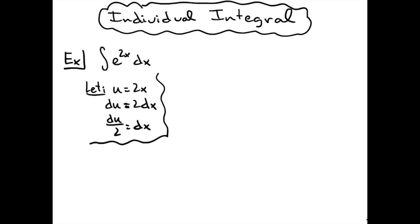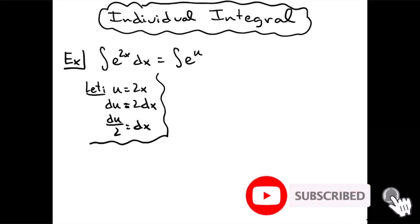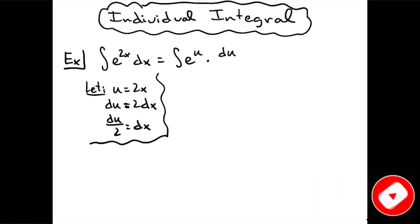Then we're going to come back up to our original problem and we're going to do some substitutions. We're going to have the integral of e. We're going to replace 2x with our u and we're going to replace dx with our du over 2.